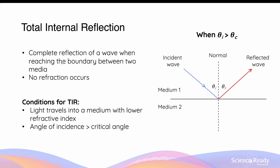Total internal reflection is a behaviour of waves where it undergoes complete reflection when it reaches the boundary or interface between two media. In total internal reflection, no refraction — that is no bending of light — occurs. All of the incident light wave that reaches the boundary will be reflected off it, and none of the light ray will travel through into the second medium to undergo refraction.